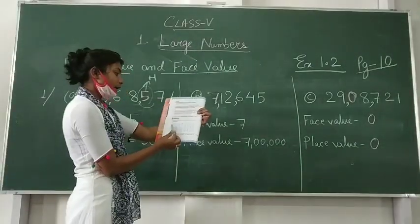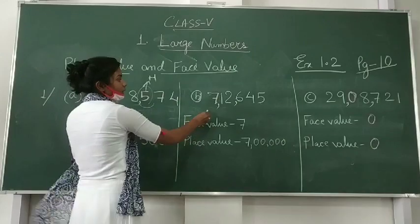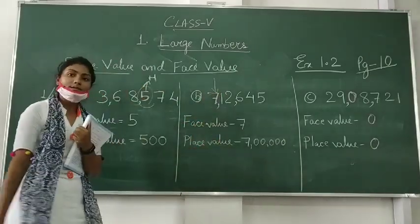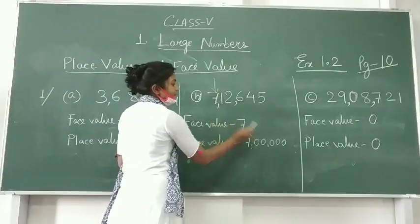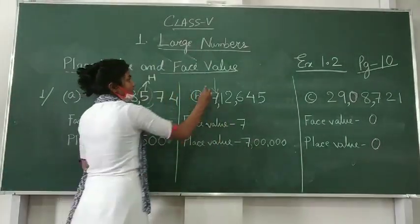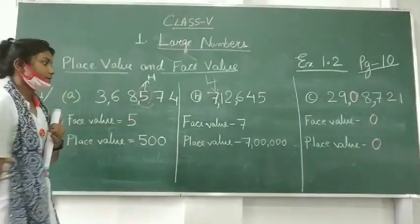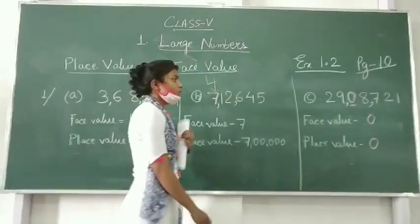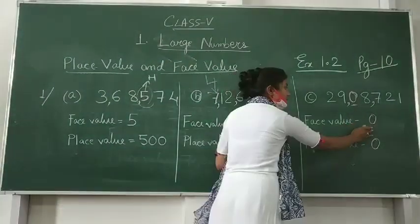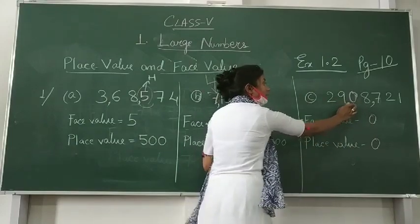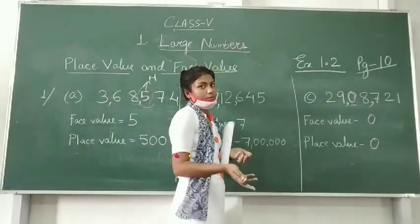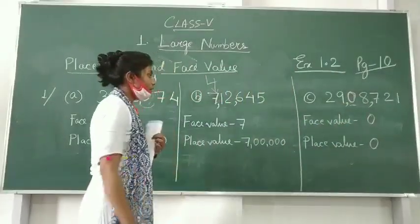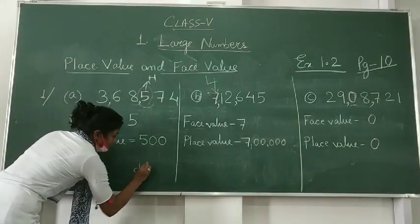Next, number B — the colored digit is seven. The face value will be seven, and the place value is seven lakh. You can see in your book the colored digits we have to write. Next, number C — zero. The face value of zero will be zero, and the place value will also be zero, no matter in which place it is.